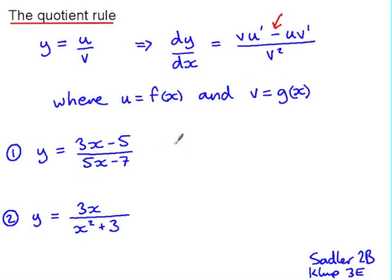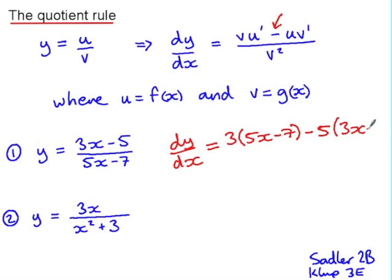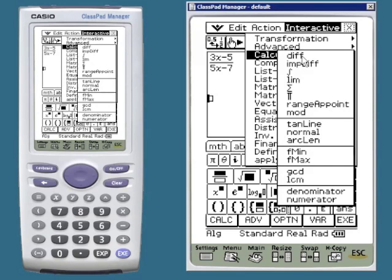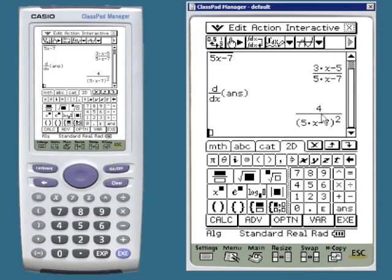In quotient rule example number 1, we've got two linear functions for u and v. dy/dx is the derivative of the first function multiplied by the second, subtract the derivative of the second multiplied by the first, all over v squared. I'm going to input my quotient using the 2D fraction template — 3x take 5 as the numerator and 5x take 7 as the denominator — then differentiate this quotient. The ClassPad simplifies the numerator and leaves the denominator in its factored form.